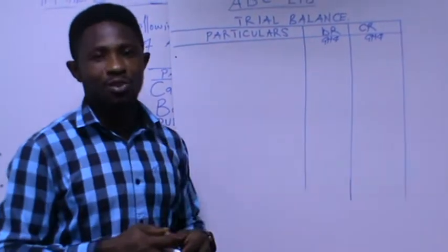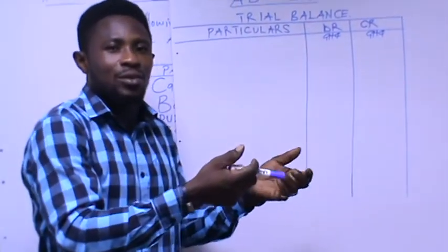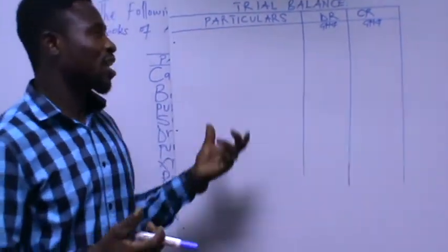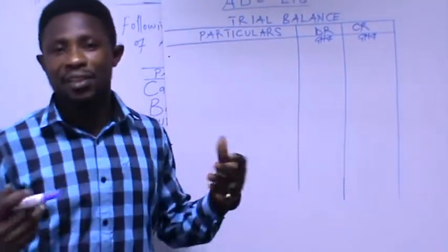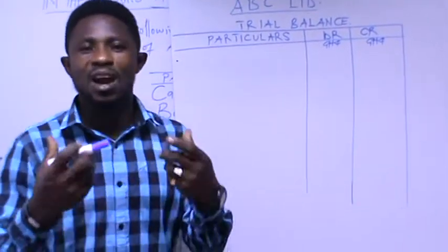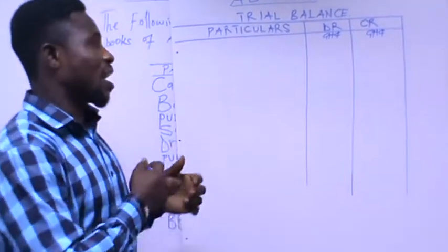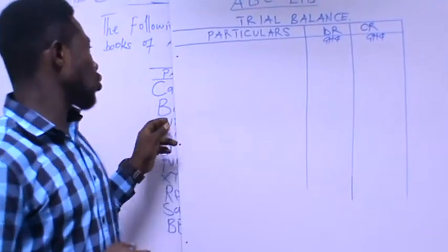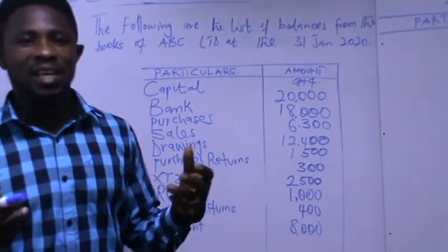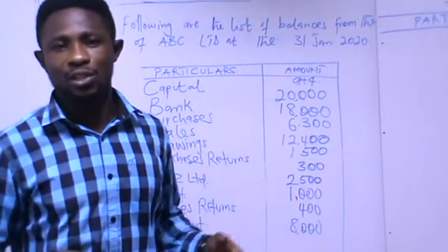The trial balance is prepared to check the arithmetic accuracy of your posting of transactions from the journals to the ledger accounts. After balancing of the accounts, you need to prepare or extract a trial balance to check that the postings you did were correct and accurate. So we say that the trial balance checks the arithmetic accuracy of your postings or your transactions recorded in the accounts.